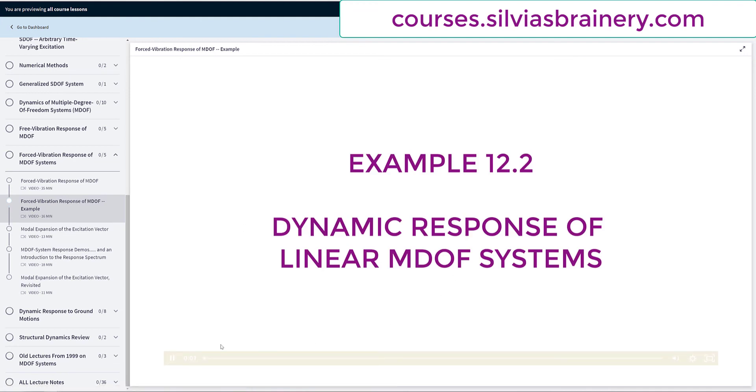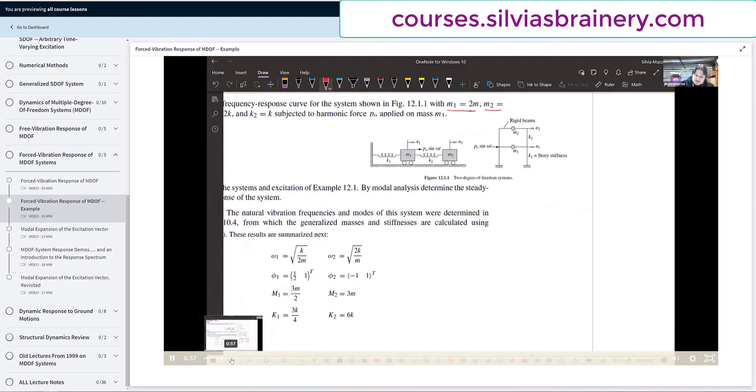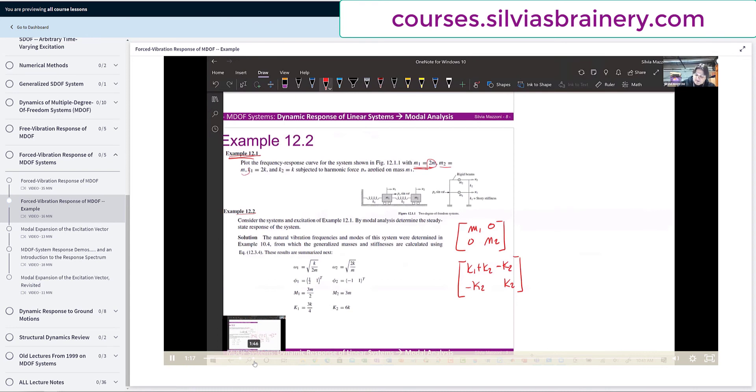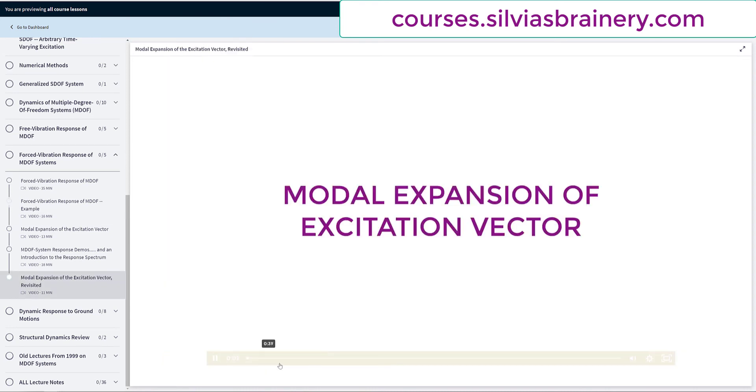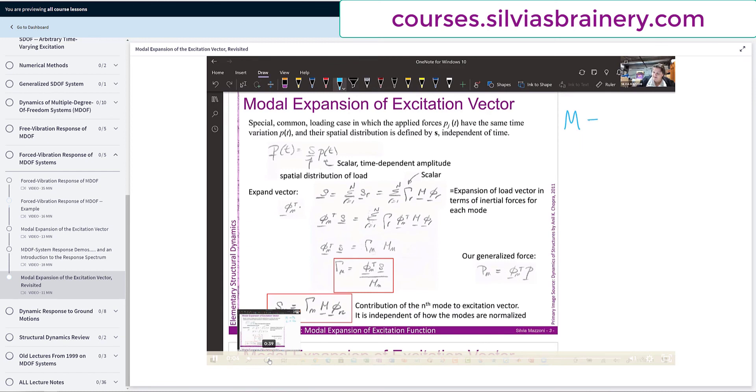Now let's look back at that example we've done before. We had our mass. So this becomes - we've talked about converting our m and our k into modal mass.